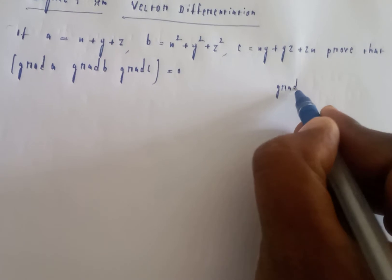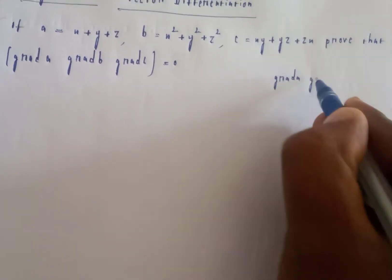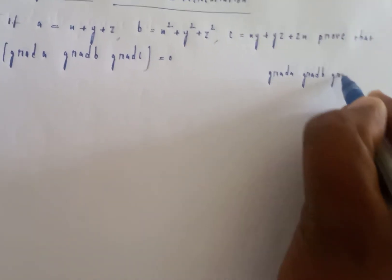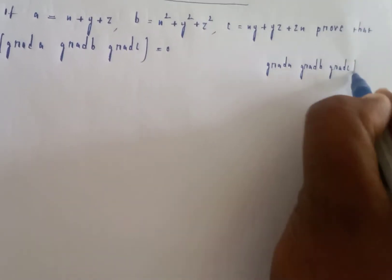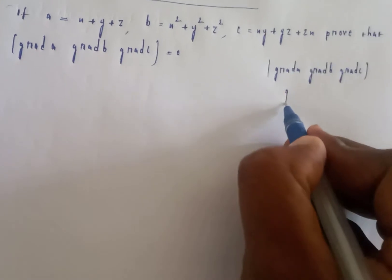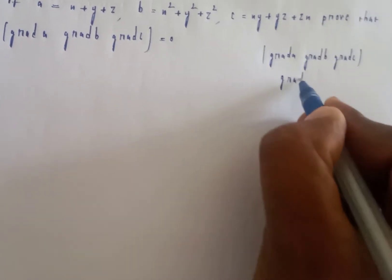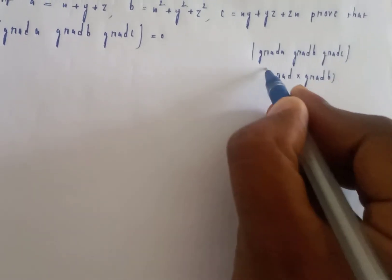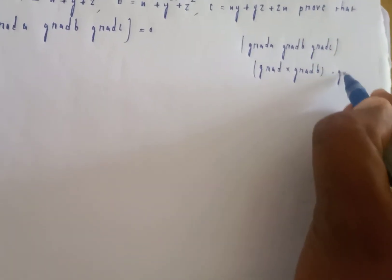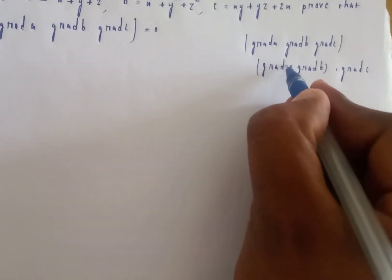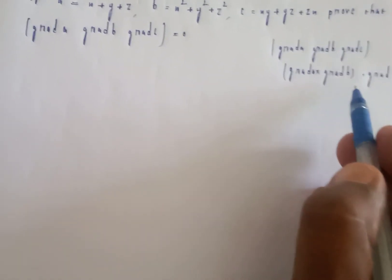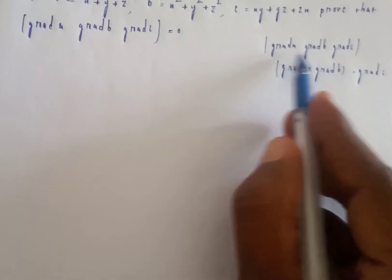First, we need to find grad a, grad b, and grad c. The formula for the scalar triple product is grad a cross grad b, dot grad c. We will compute the cross product first, then take the dot product.